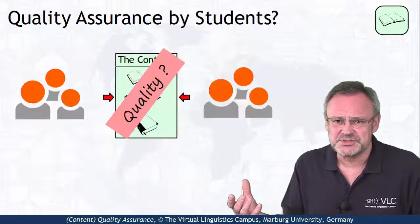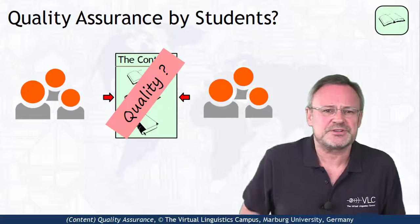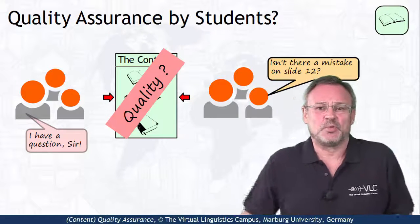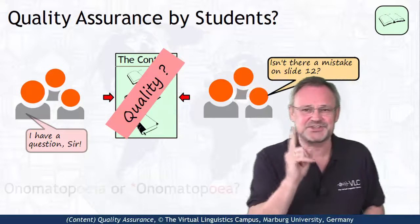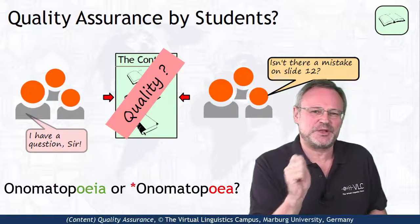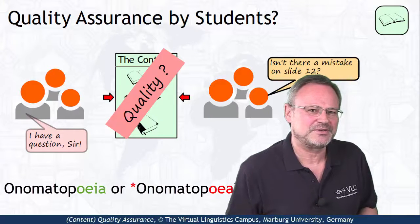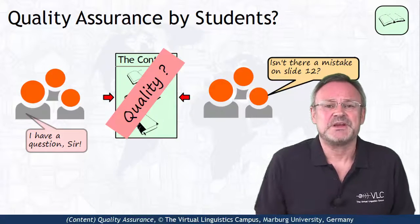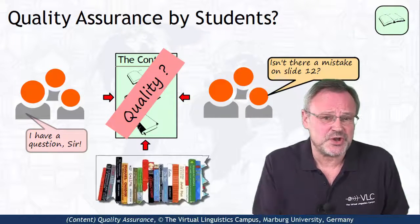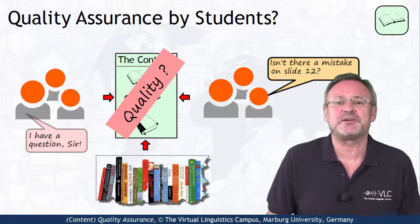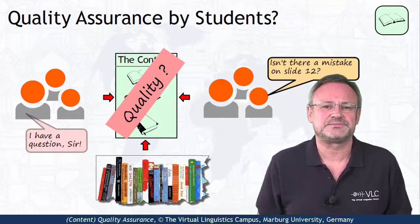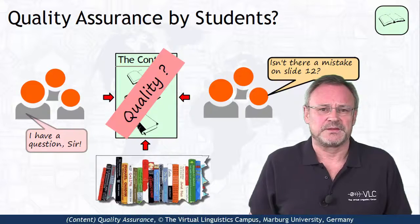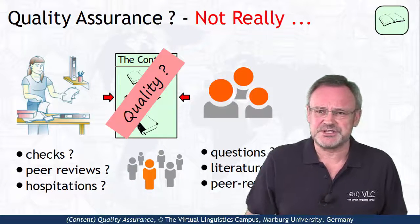And what about the students? Couldn't they assure the quality of content? Well, all they could do was ask questions in class about what you wrote on the board. I remember questions such as, isn't onomatopoeia spelled with four vowels at the end, when I had written it down with just three on the board? This happened. And maybe some of them even found that you misinterpreted the literature, and yet others consulted you after class in order to ask questions about the content. But all that was the exception rather than the rule. So true content quality assurance did not really exist.